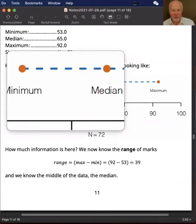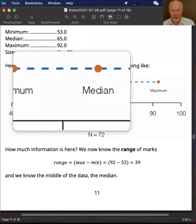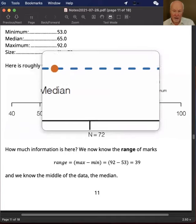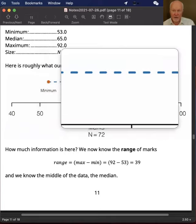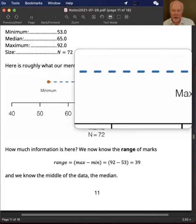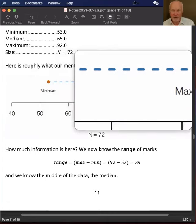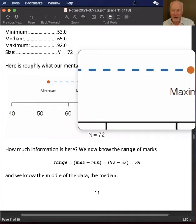So between 53 and 65, and then the upper half of the students are spread out over a range of about 27 marks between 65 and 92.